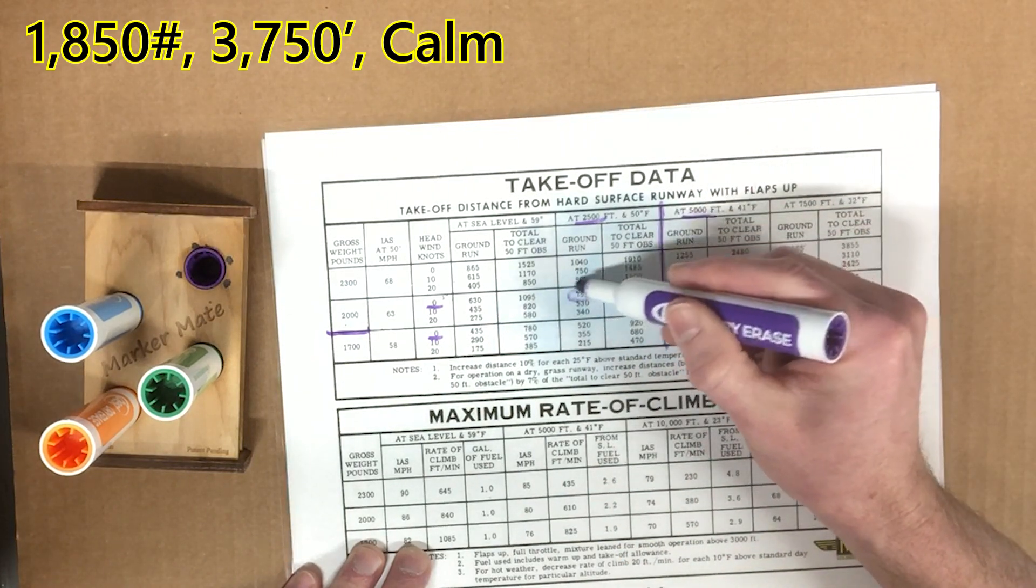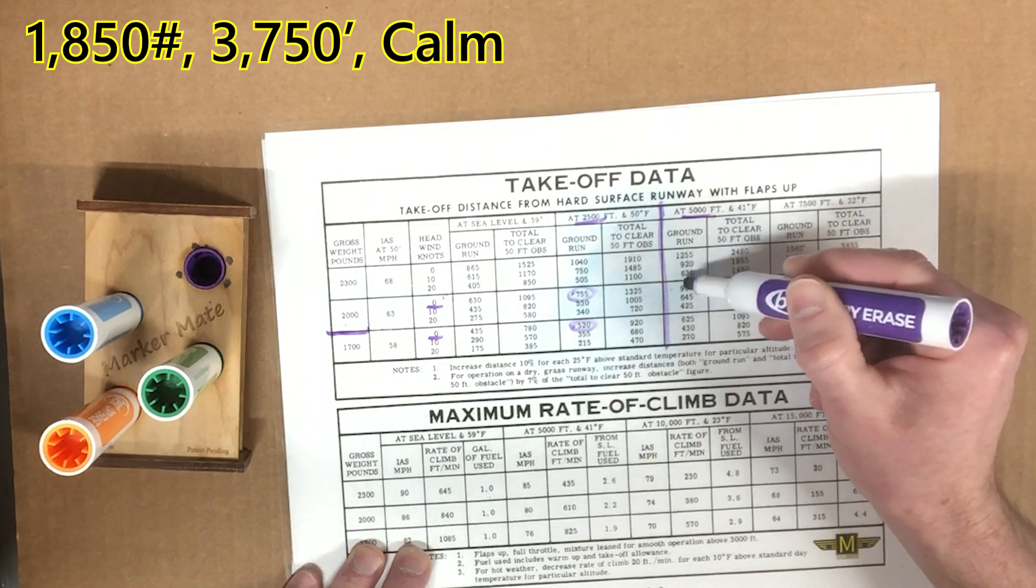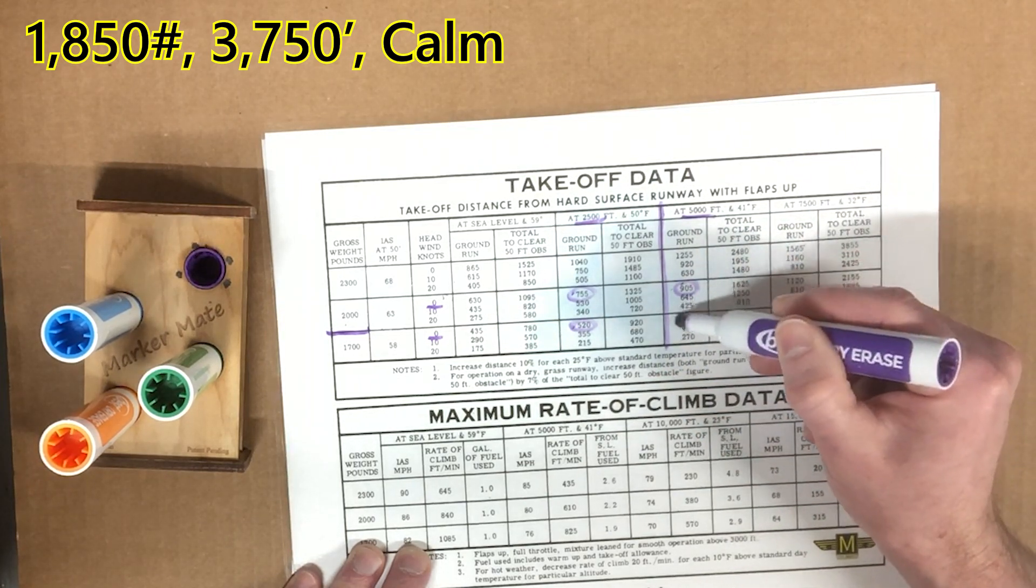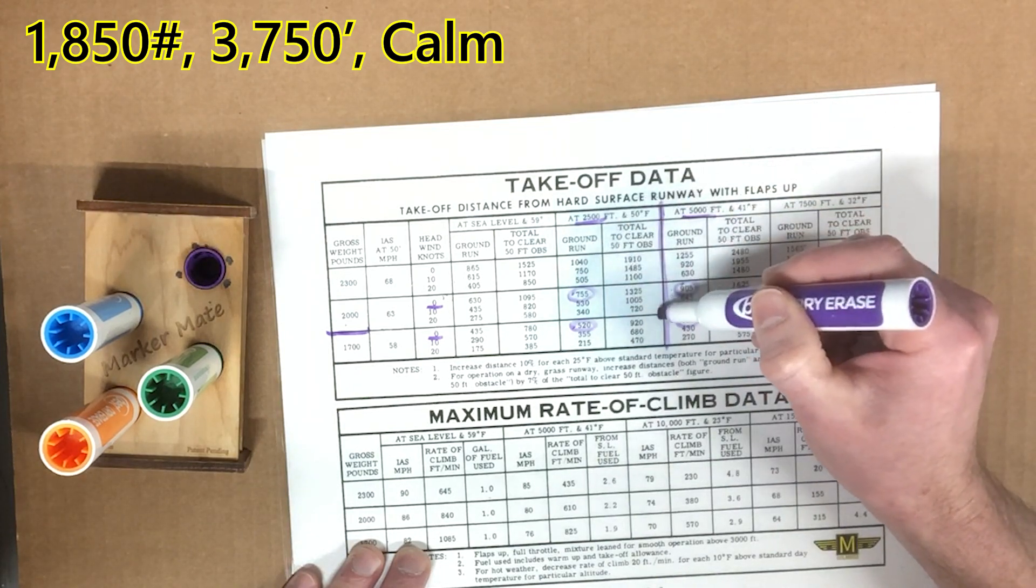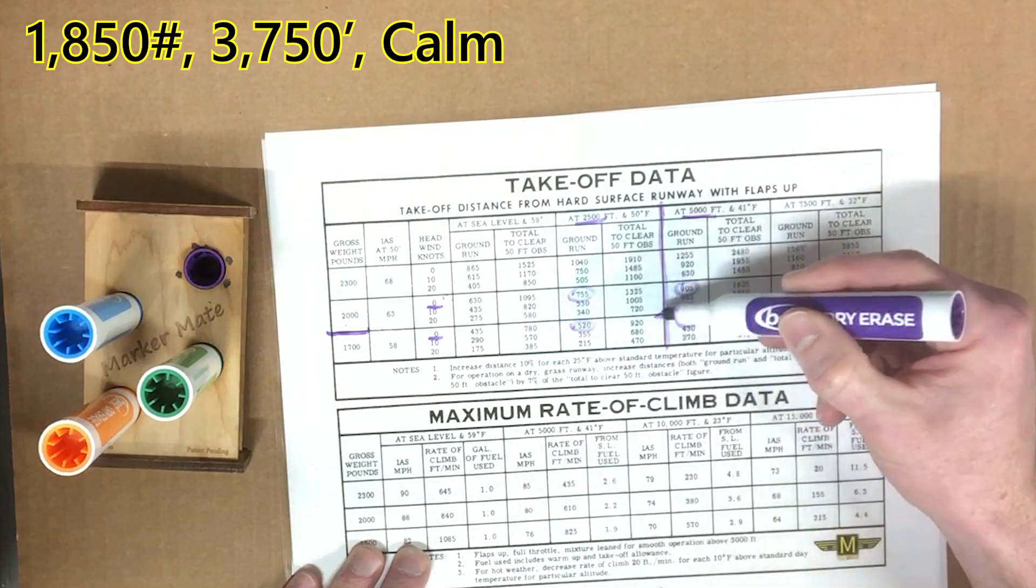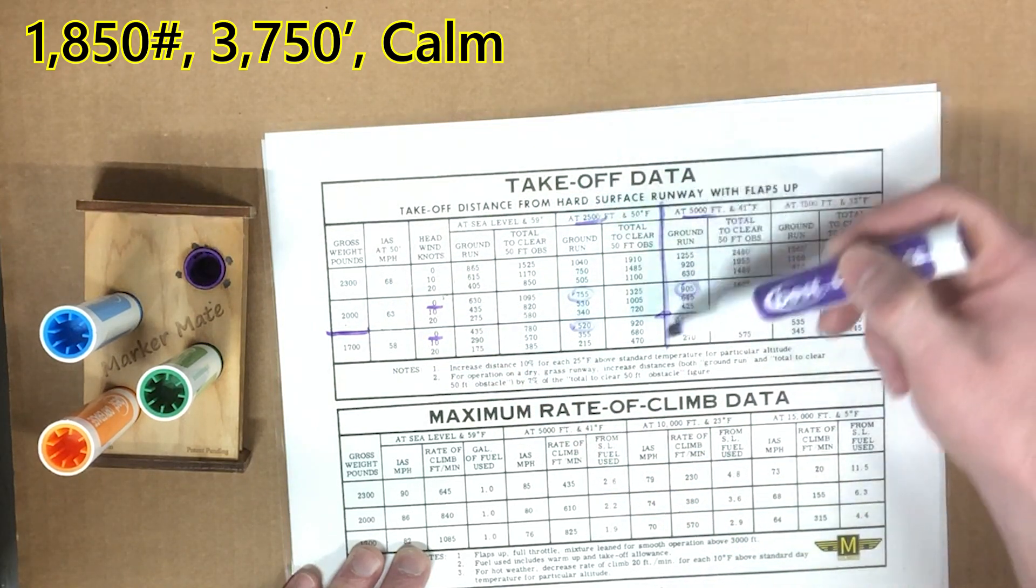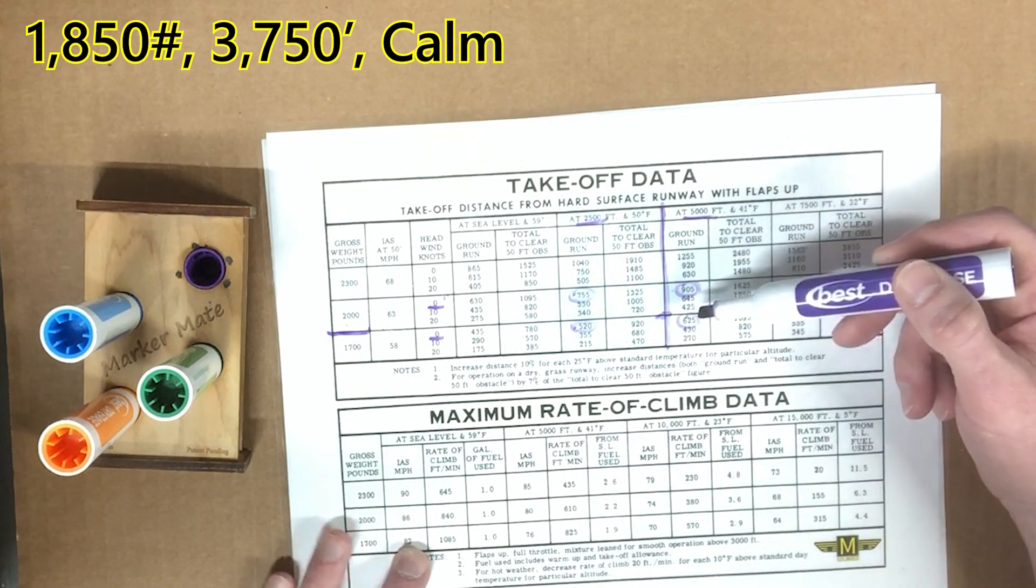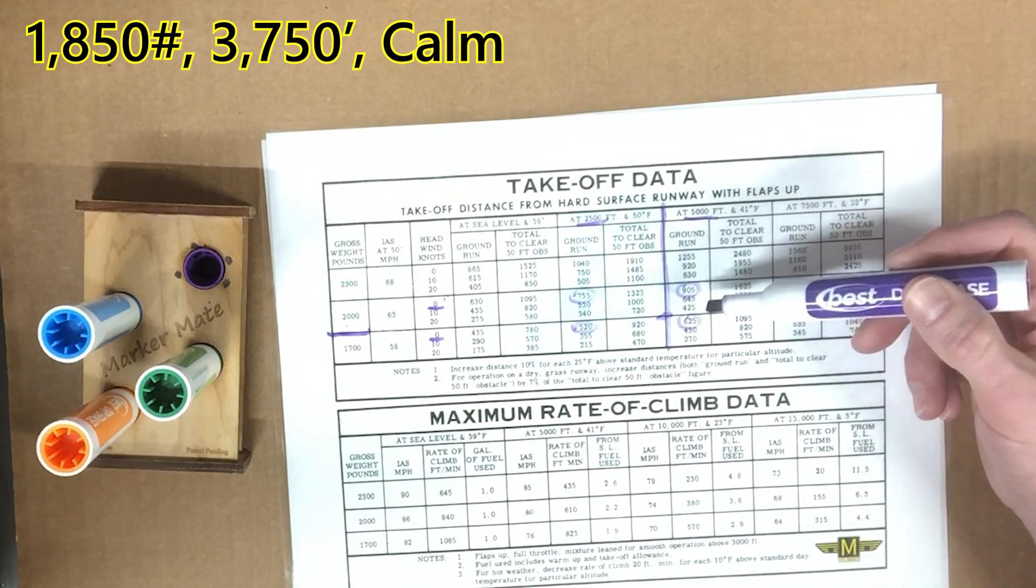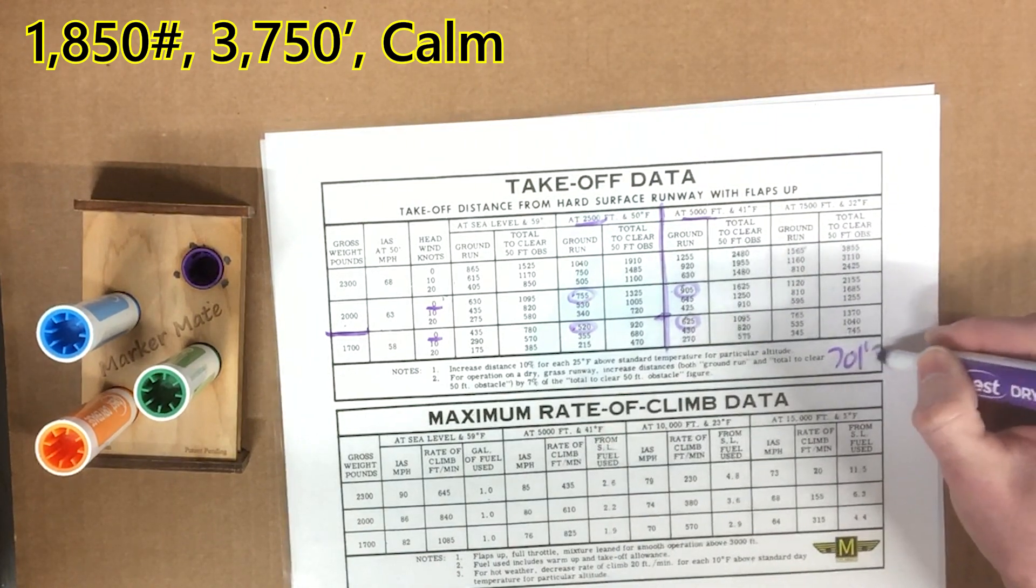So we have to interpolate. We're going to pay attention to the 755, 520, 905, and 625, right? Because we are right here. We're on this dot. Halfway between 1,700 and 2,000. Halfway between 2,500 and 5,000. So we just need to average these four numbers to get our ground run, in which case it ends up being 701 feet, 3 inches.